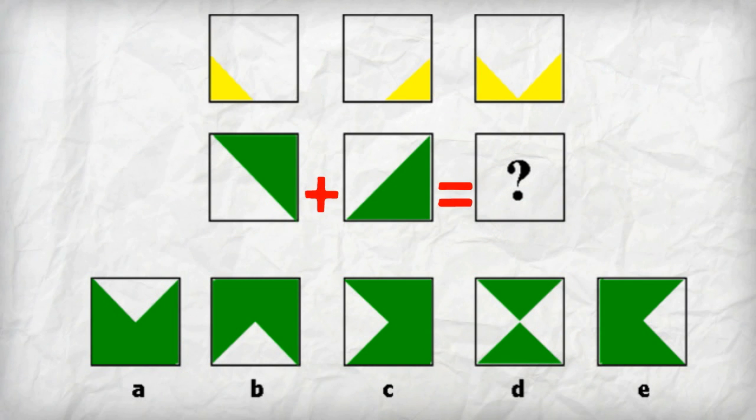Now look at the second row. If the two green triangles in the second row were combined in the same way as the yellow triangles in the first row, what would they look like? They would look like answer choice C.